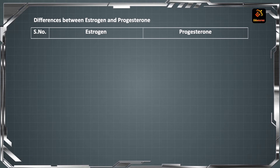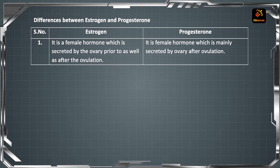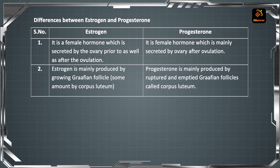In the first column we will talk about estrogen and in the second part we are going to talk about progesterone. Estrogen is a female hormone which is secreted by the ovary prior to as well as after ovulation. It is mainly produced by the growing Graafian follicle and some amount by corpus luteum.